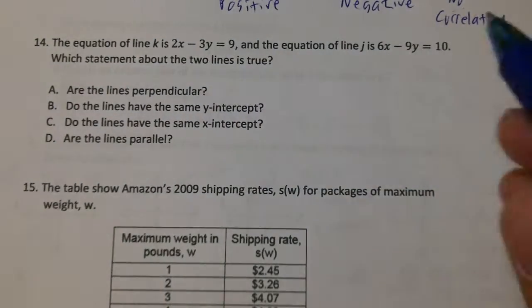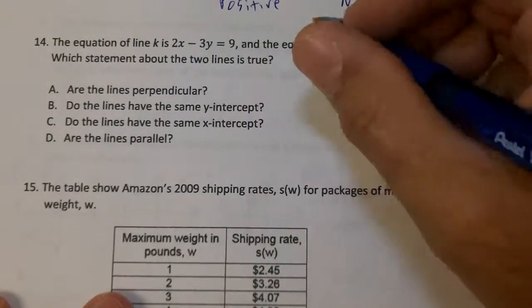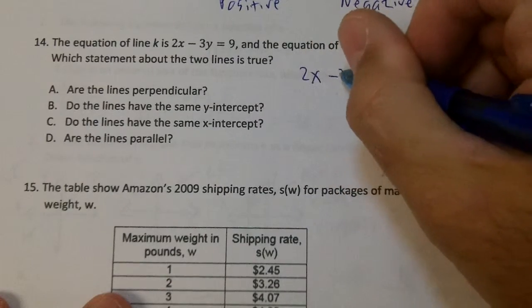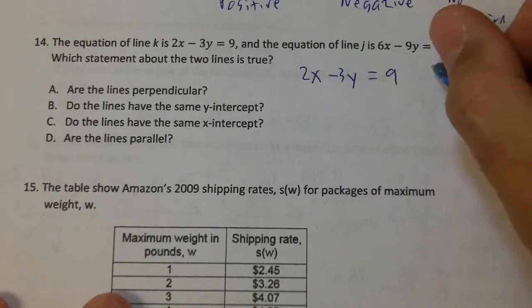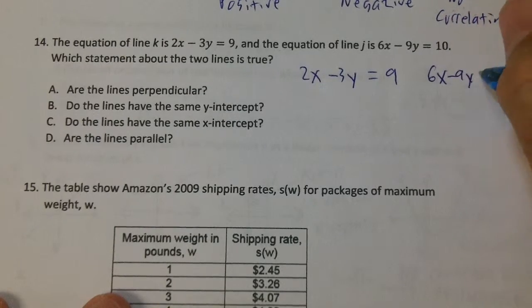Number 14: The equation of line K - y'all write down 2x minus 3y equals 9 - and the equation of line J is going to be 6x minus 9y equals 10.